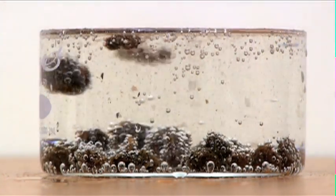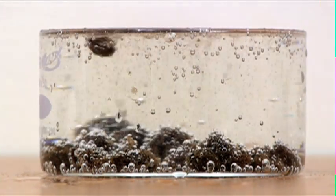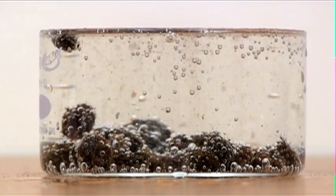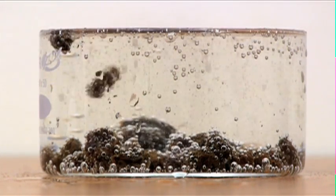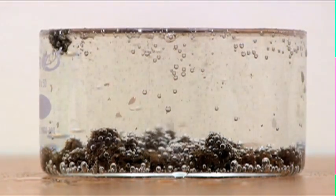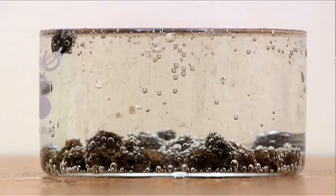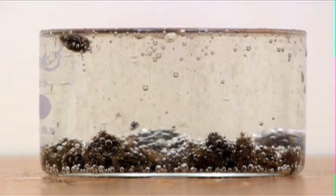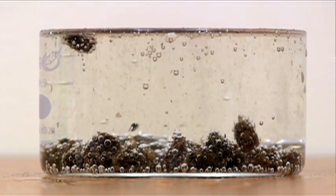Soda has carbon dioxide gas which escapes as bubbles. Raisins are more dense than water and initially sink. Since raisins have wrinkled skin, the bubbles can get trapped on the surface as they try to escape. These bubbles are buoyant in water because they're low density and cause the raisins to float. After the raisins reach the surface, the bubbles pop and the raisins sink again. This process repeats and the raisins dance.